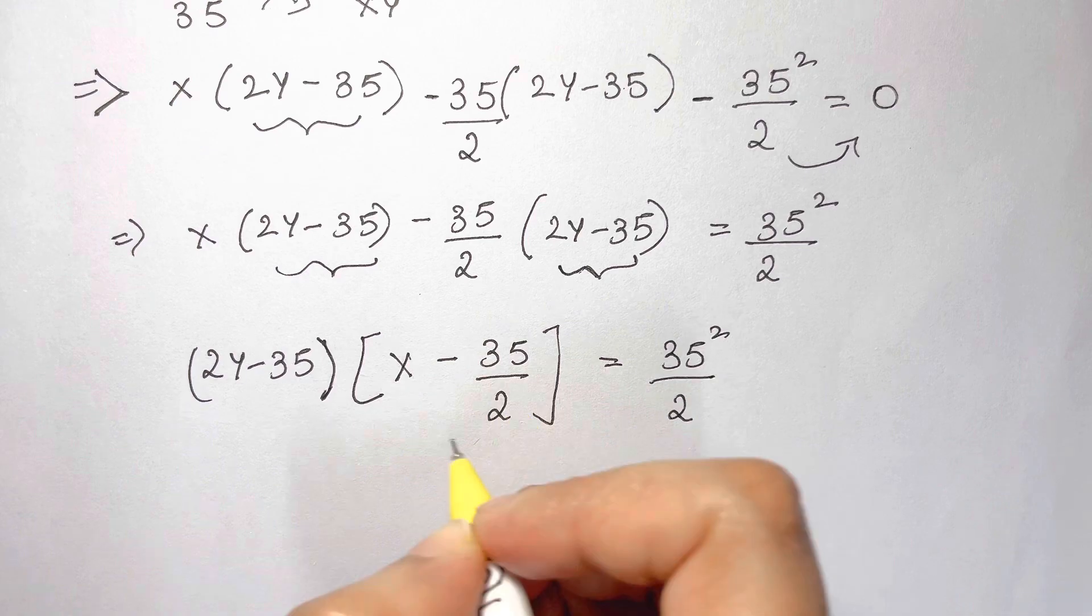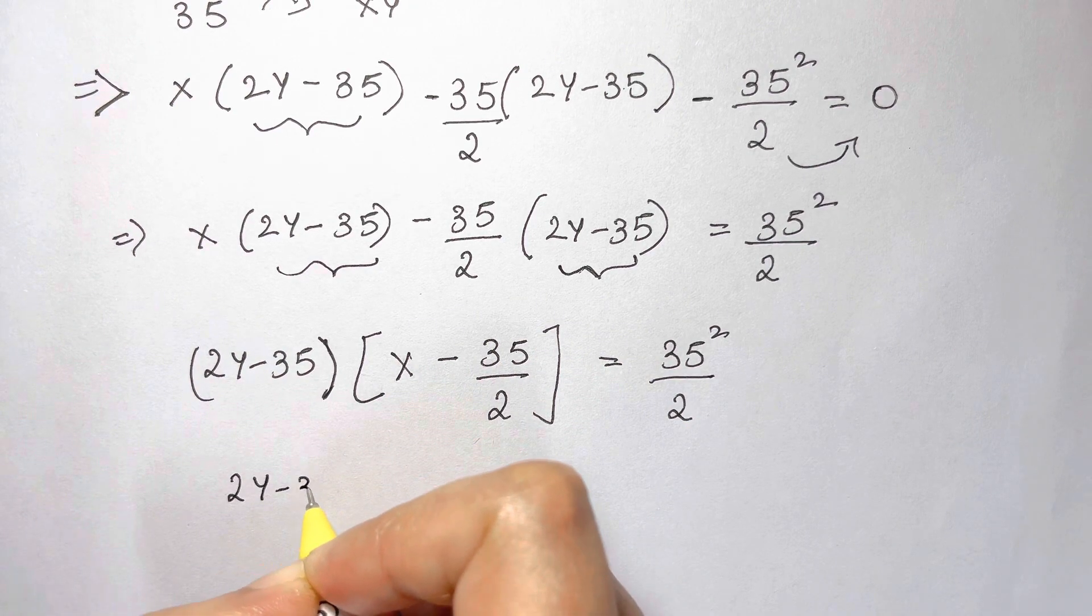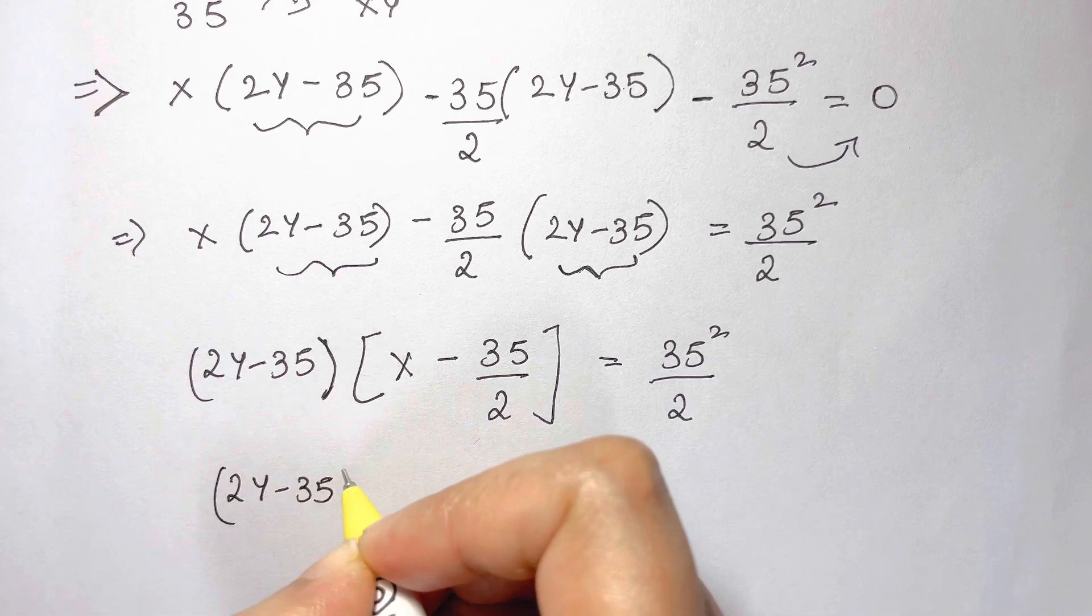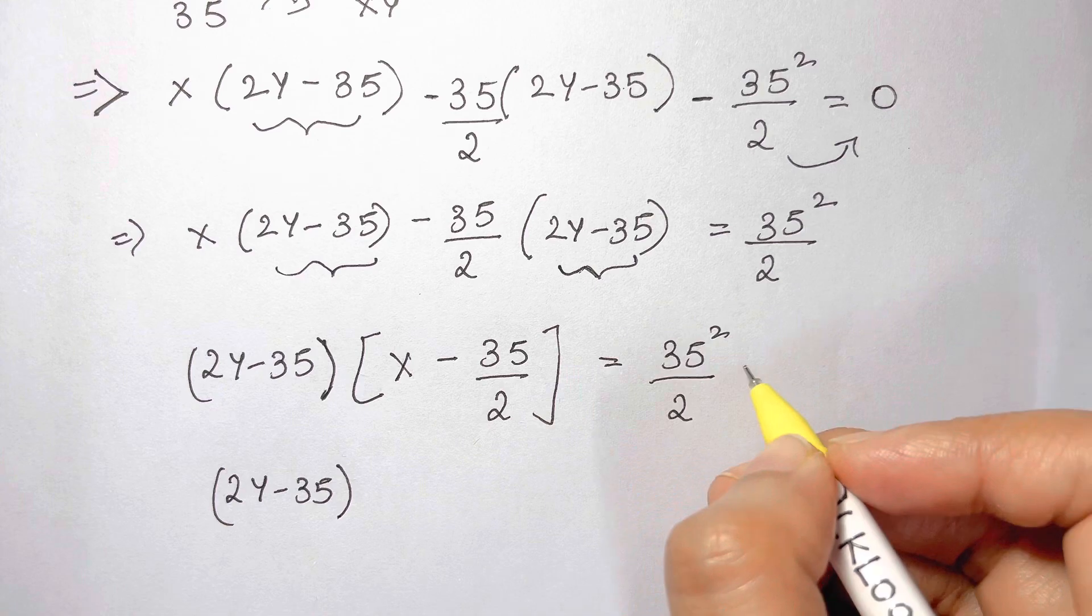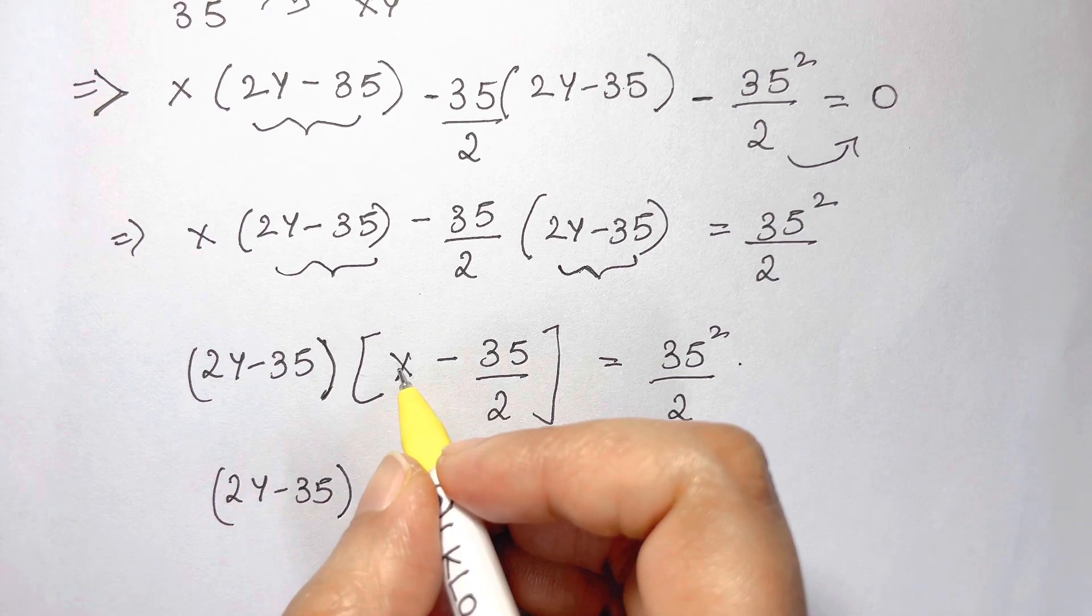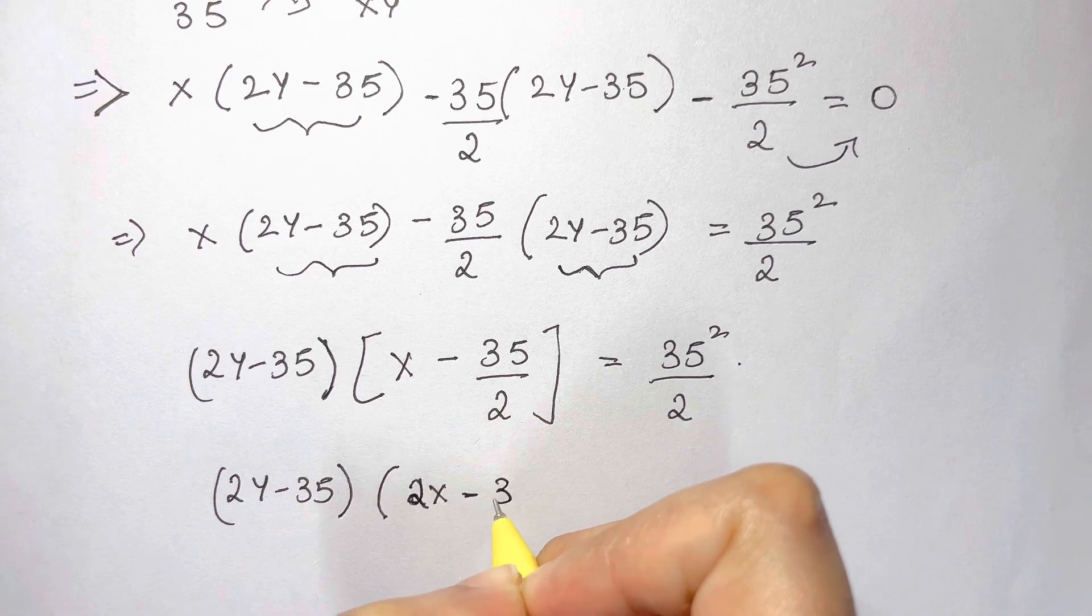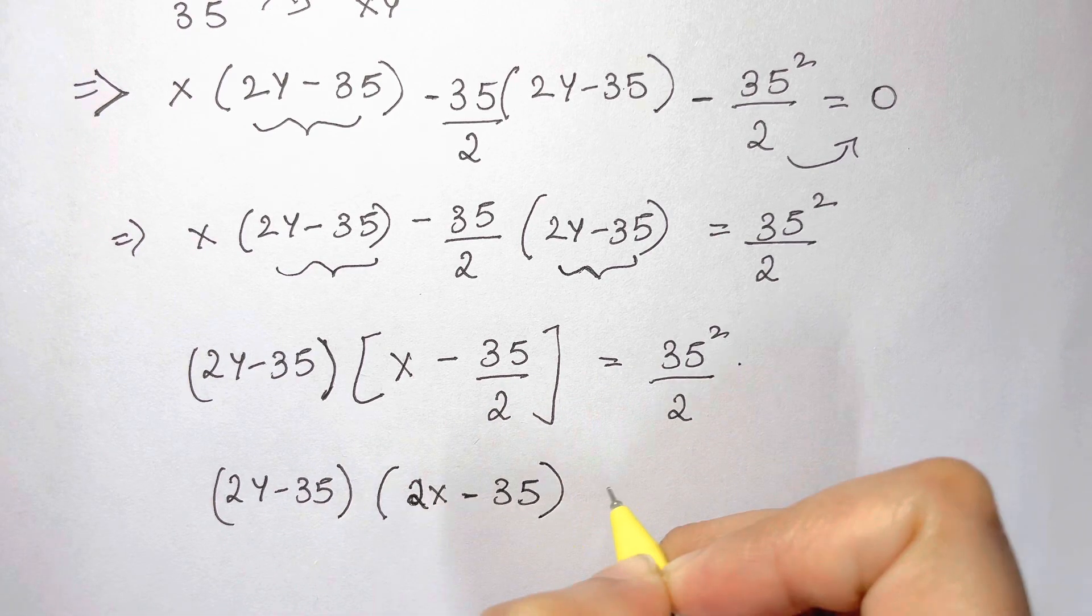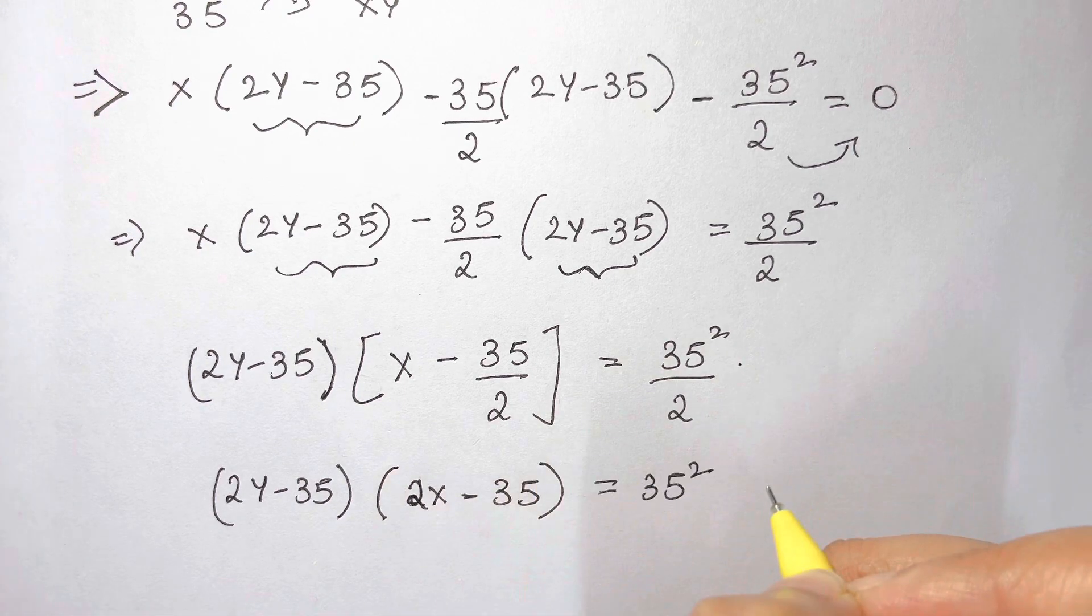Now, let's take LCM here for this term. So what are we left with? We have 2y minus 35. And then this 2, when we take LCM goes this side. So we have 2x minus 35. 2x minus 35 is equal to 35 square as 2 and 2 gets cancelled.